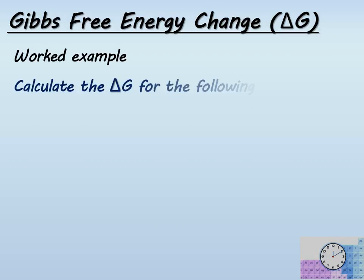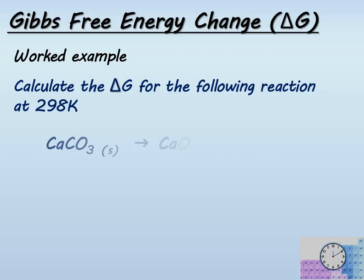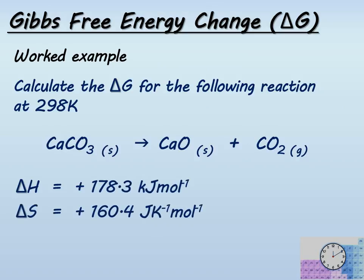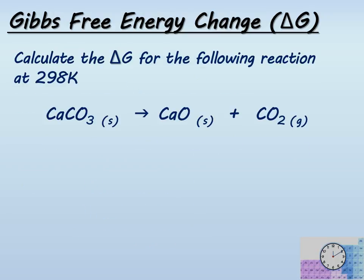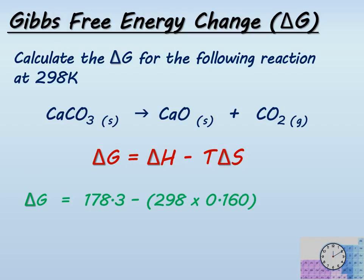For example, calculate the delta G for the following reaction. We have the thermal decomposition of calcium carbonate, and we are given the enthalpy data and the entropy data. Note that the first thing we should do is divide delta S by 1000 so that we get an entropy change in kilojoules per Kelvin per mole. With that information, we slot the numbers into the equation.